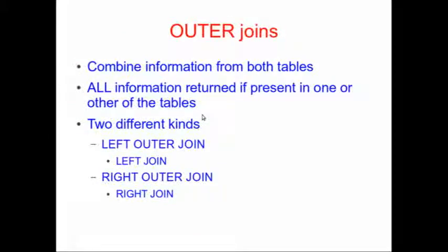We've talked about inner joins. Inner joins are very simple — they take data from two different tables and, provided there's similar data in both tables, they'll join those results and give them back to you. An outer join is the alternative kind of join. It combines information from two tables like an inner join does. However, the outer join returns information that's present in either of the tables, combined with the other table. There are two different kinds of outer join: a left outer join, sometimes called a left join, and a right outer join, sometimes called a right join. The word outer is a little bit unnecessary, as we'll see.